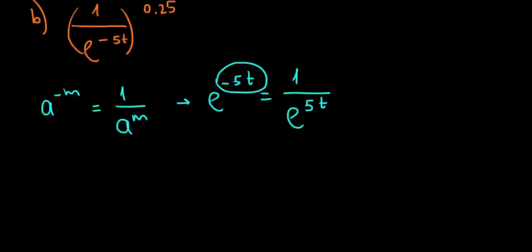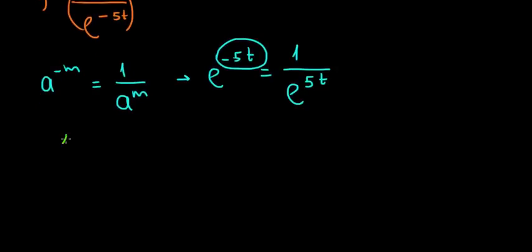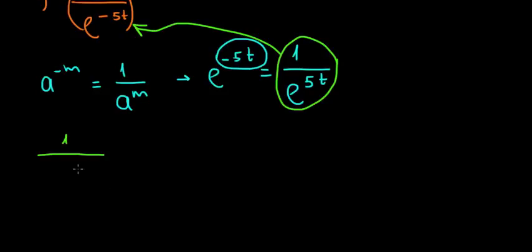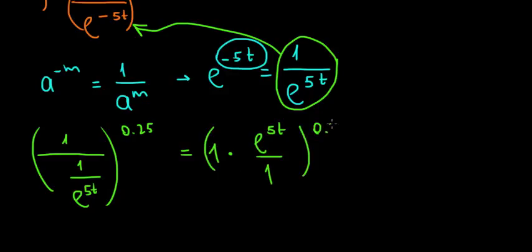Let's substitute that result. We have 1 divided by e to the power of minus 5t, which becomes 1 divided by the quantity 1 divided by e to the power of 5t, all to the power of 0.25. Dividing by a fraction means multiplying by its inverse, so we get e to the power of 5t divided by 1, all to the power of 0.25.